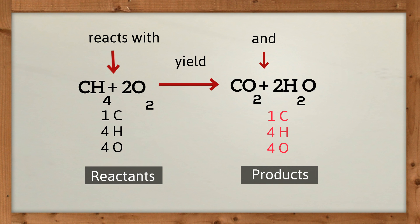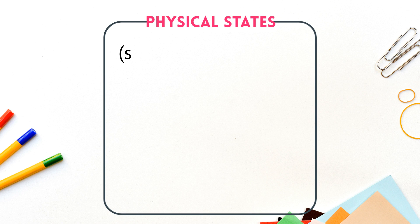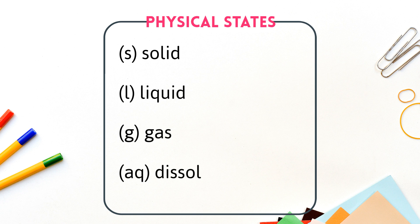You can also indicate the physical states of the reactants and products. Here are some symbols: S equals solid, L equals liquid, G equals gas.